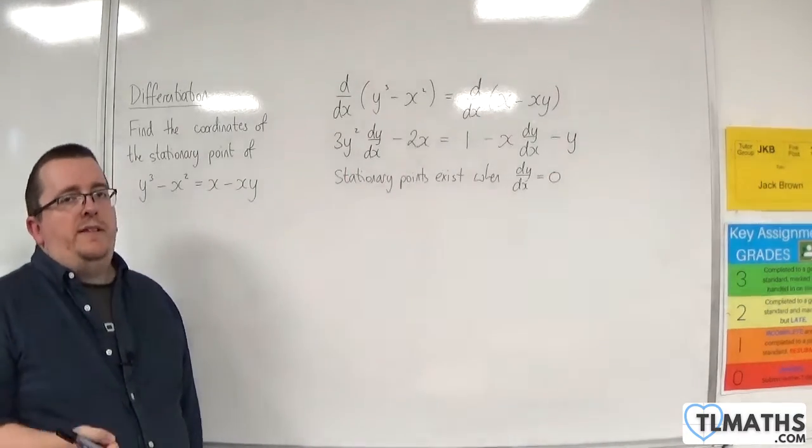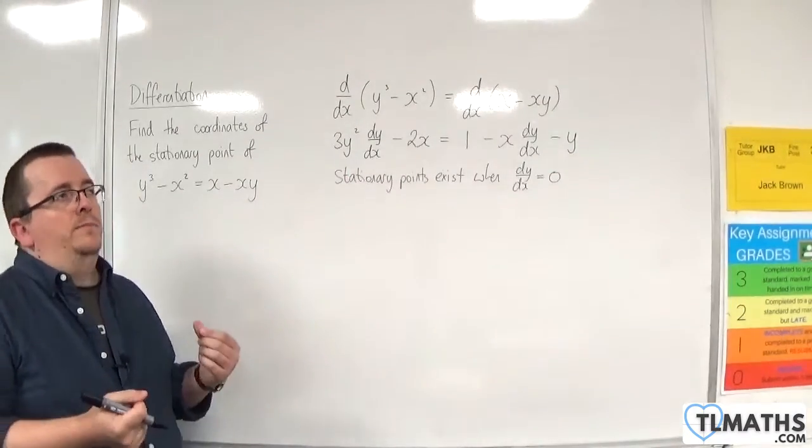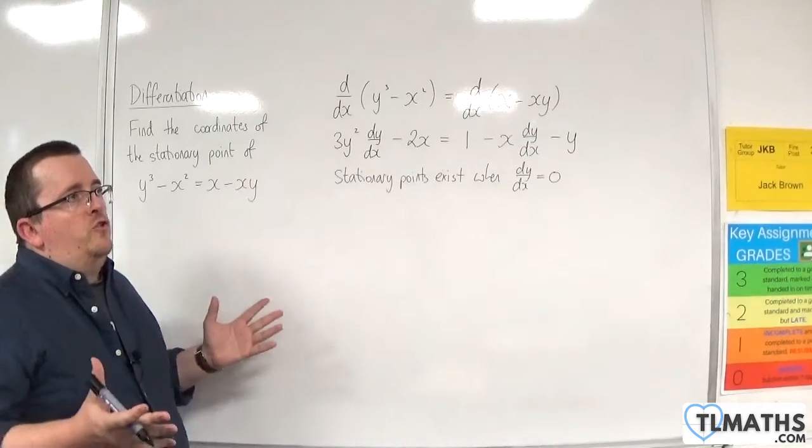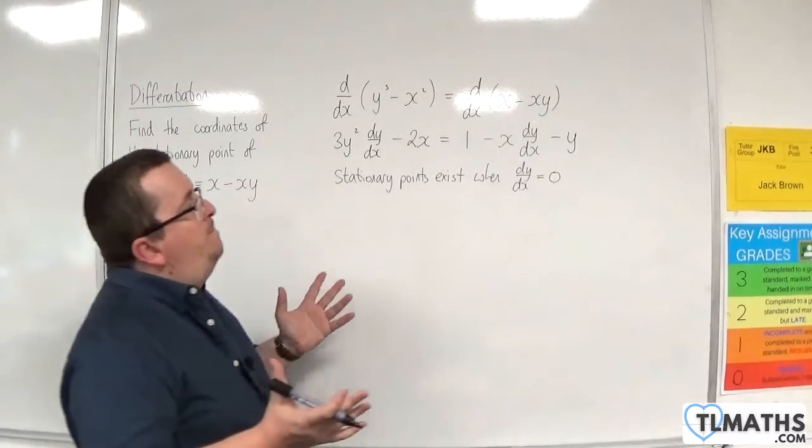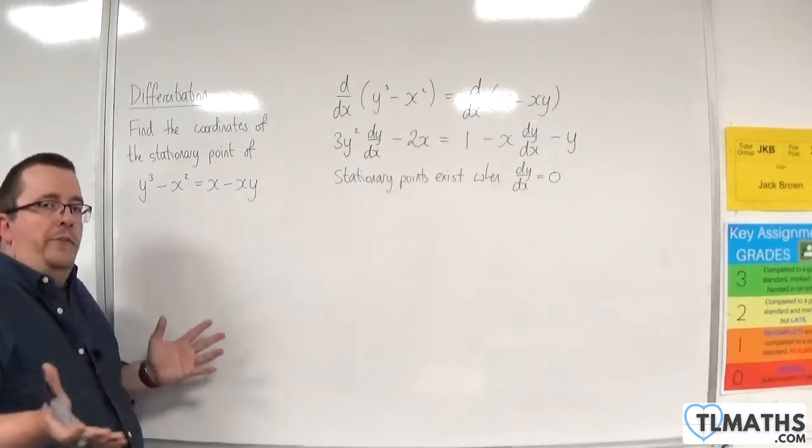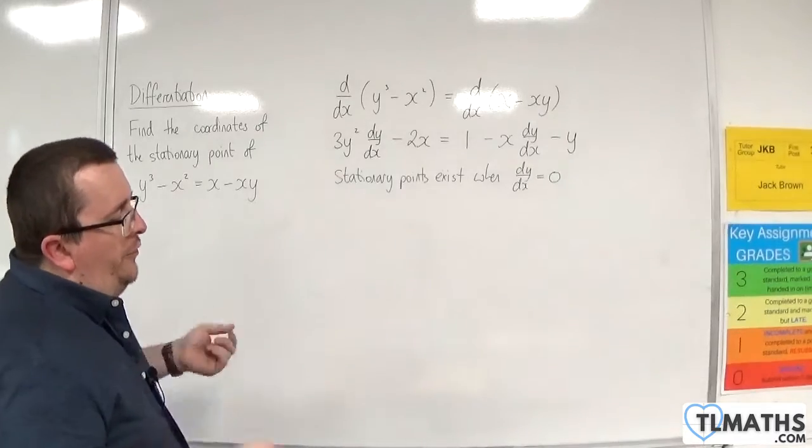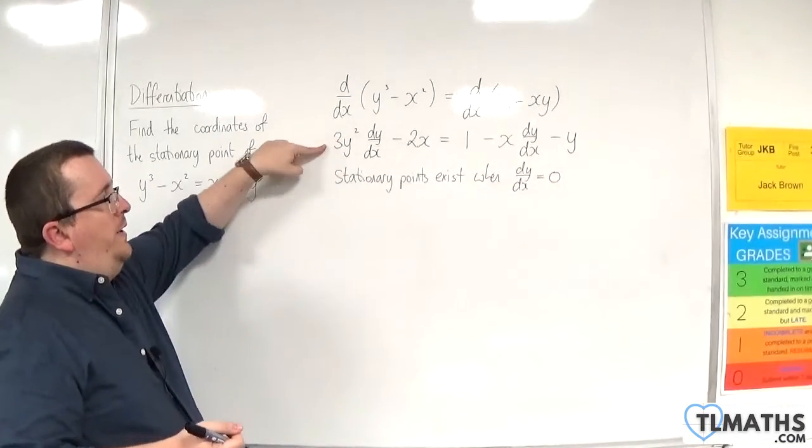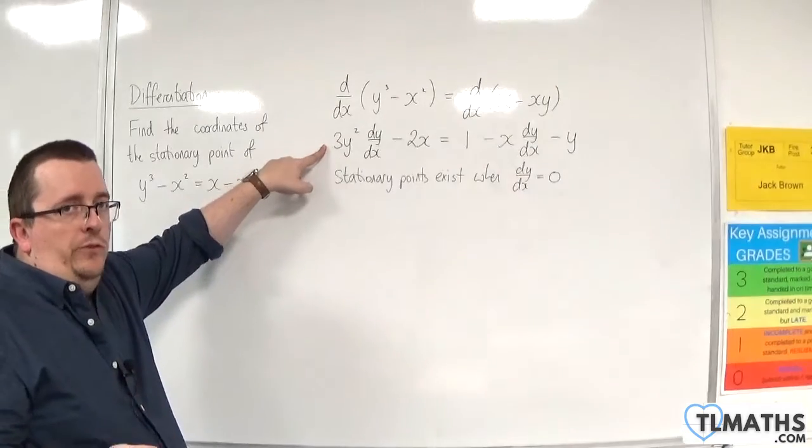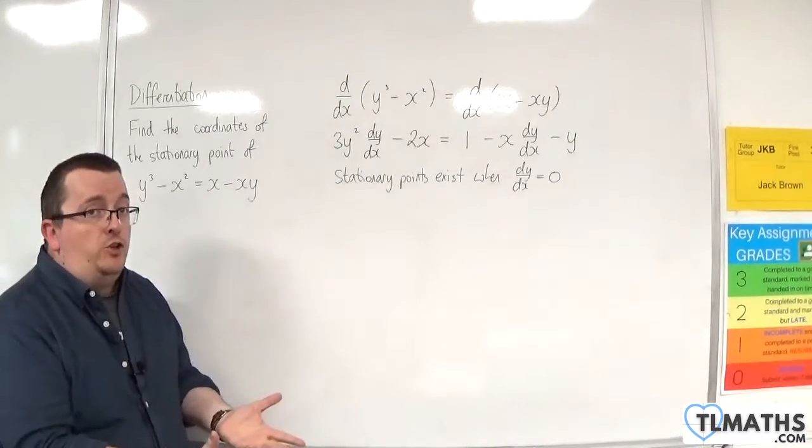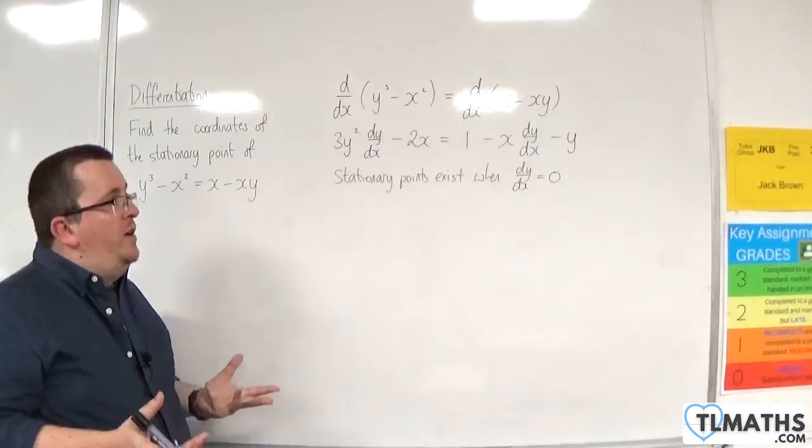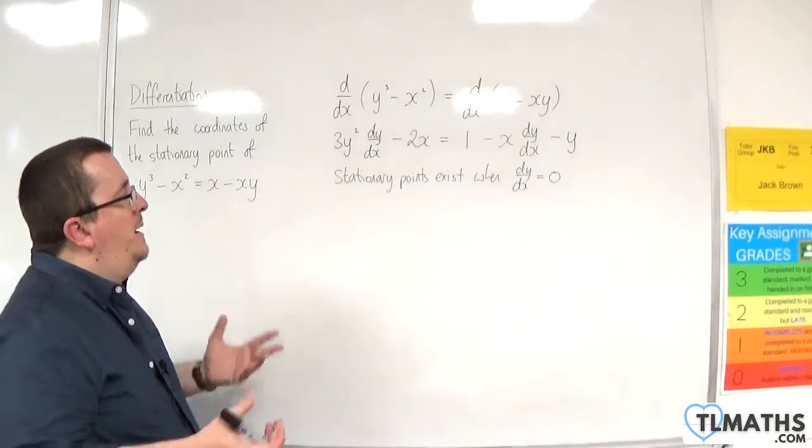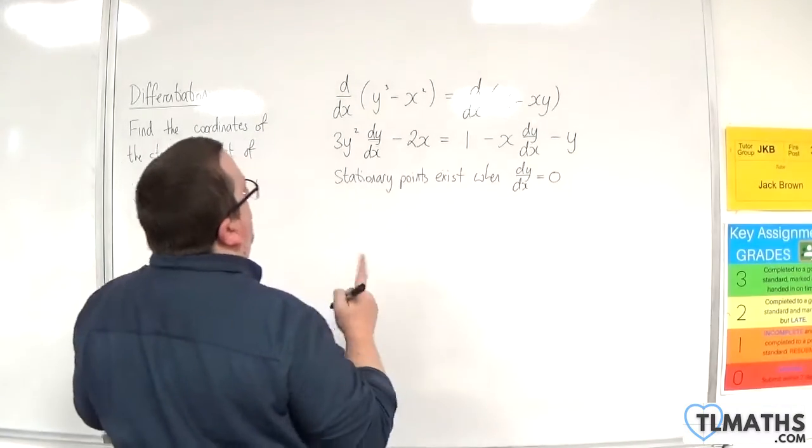Now, you've got two alternative paths. Either you rearrange this to get dy/dx equals something, then you put that fraction equal to 0, and then the numerator is equal to 0. So I will do it that way first.